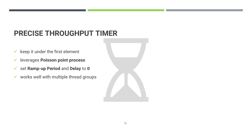This timer also works with multiple thread groups. If you have multiple thread groups in your test plan, it works well — no need to add a random delay for each thread group so that it starts in a random phase. The Precise Throughput Timer will take care of those configurations.